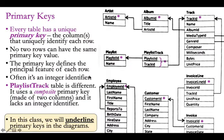One table worth pointing out is playlist track — this has a composite primary key. Two things are underlined: playlist ID and track ID. That means the combination of these two columns has to be unique. There's no single column that has to be unique, but the combination does. We'll see how this is used later with many-to-many relationships.